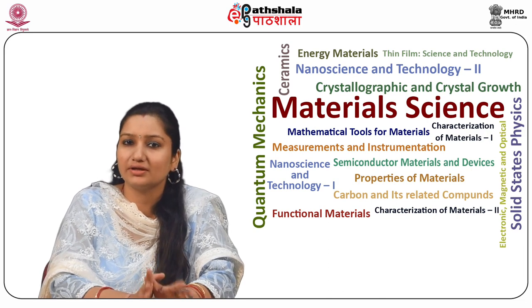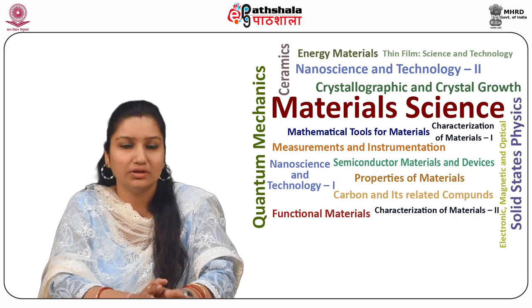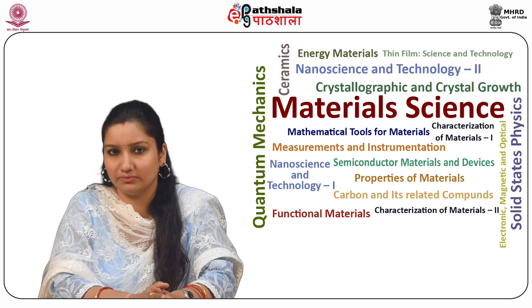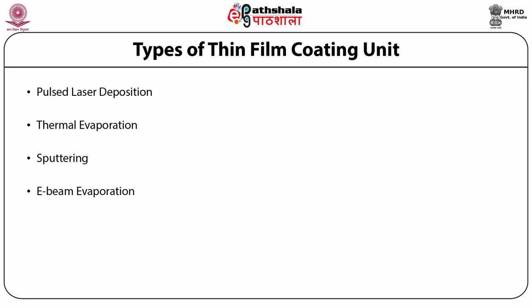There are various techniques which use these pumps to produce ultra-high vacuum in order to deposit high quality thin films. These are the types of vacuum thin film coating units in which thin film is deposited inside a vacuum: pulse laser deposition, thermal evaporation, sputtering, e-beam electron beam evaporation, molecular beam epitaxy, and PECVD or plasma enhanced chemical vapor deposition.